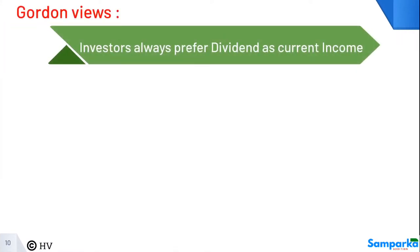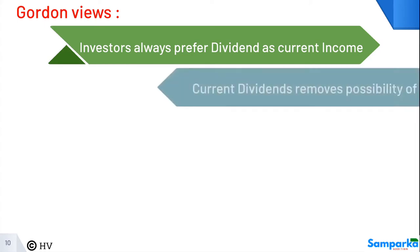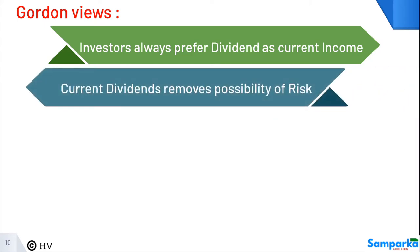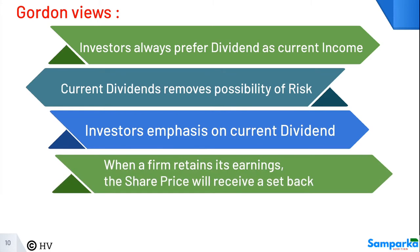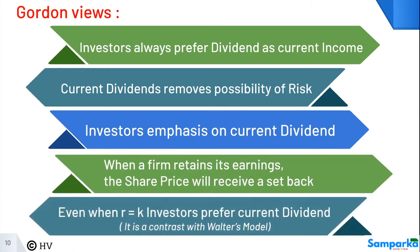Gordon's views are as follows: investors always prefer dividend as current income. Current dividends remove the possibility of risk. Investors place emphasis on current dividend. When a firm retains its earnings, the share price will receive a setback. Even when R equals K, investors prefer current dividend — this is in contrast with Walter's model.